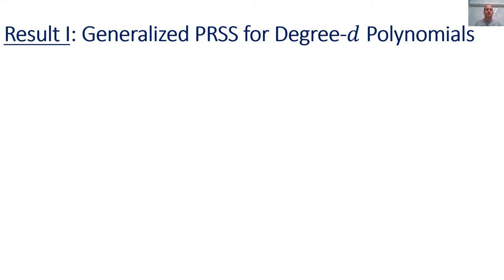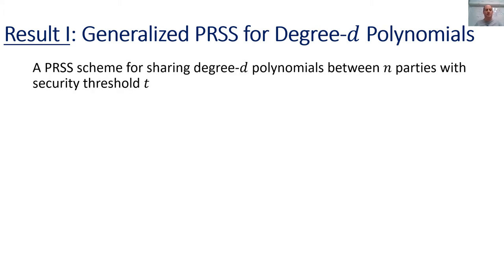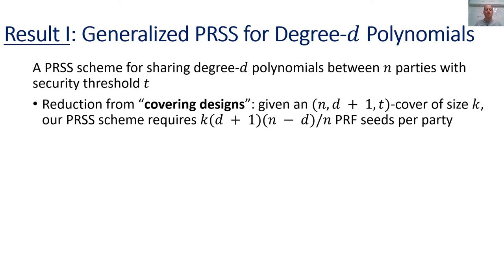Using our three contributions, we obtain the following results. The first result is a PRSS scheme for sharing degree D polynomials between N parties with security threshold T, where we make a reduction from the covering design problem and show that given a solution of size K, our PRSS scheme requires K times (D plus 1) times (N minus D) divided by N PRF seeds per party, which improves upon the classical result of Cramer et al. when D is larger than T.